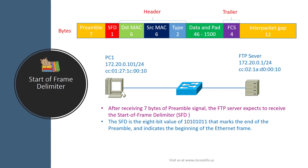After receiving seven bytes of preamble signal, the FTP server expects to receive the Start of Frame Delimiter, or SFD. The SFD is the 8-bit value 10101011, which marks the end of the preamble and indicates the beginning of the Ethernet frame.